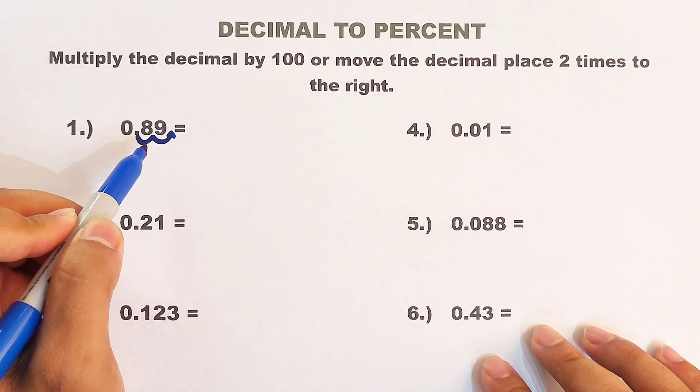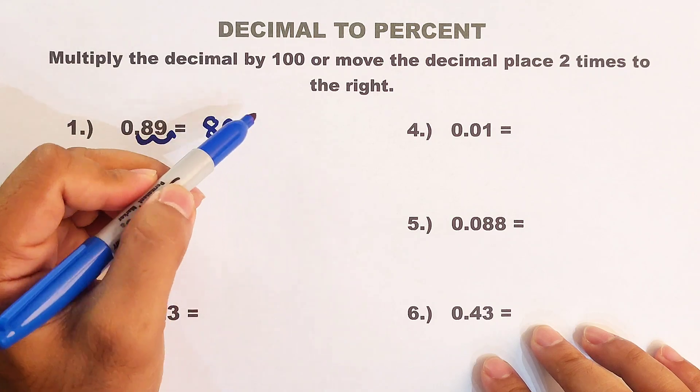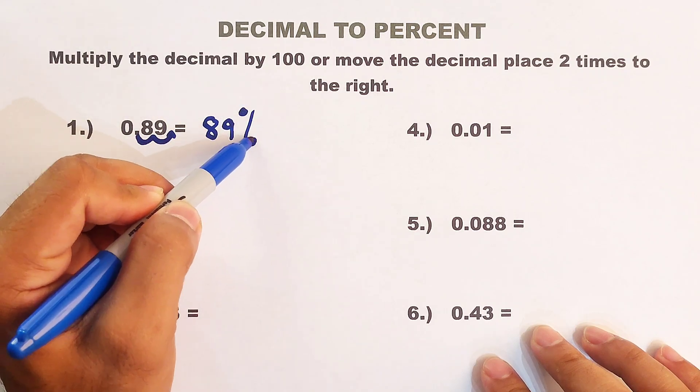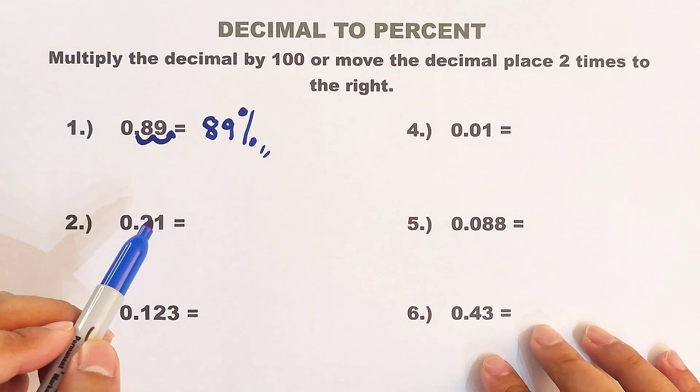And as you can see, you have a new whole number, which is 89. And then we will put the percent sign. And as you can see, this is the answer. 0.89 is 89%.